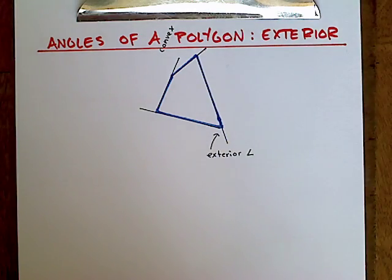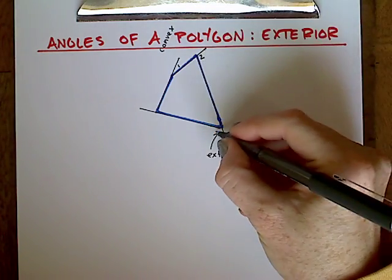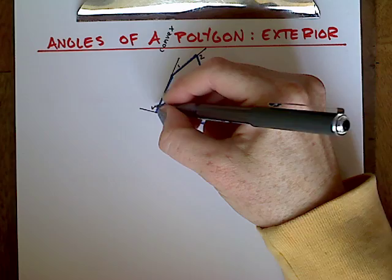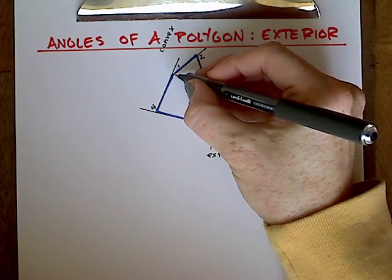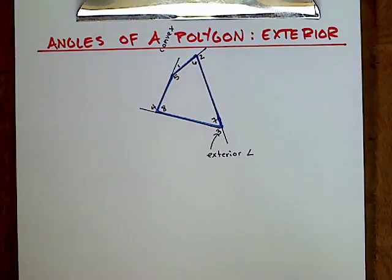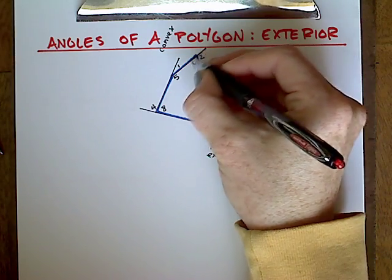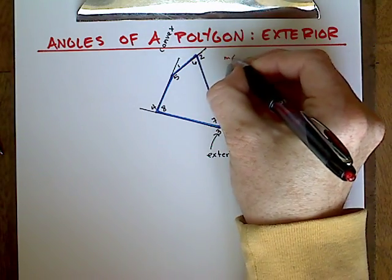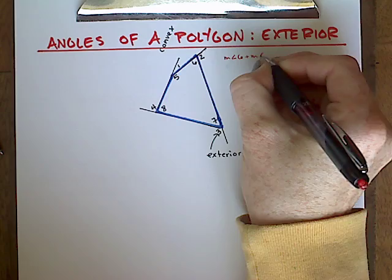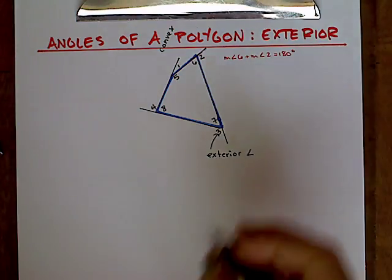So now I'm going to number these angles one through four. And then I'm going to number the interior angles five through eight. And the reason why I'm going to do this is I want to show you the relationship between the exterior angle and the interior angle. Notice six and two form a straight angle together, meaning that their sum equals 180 degrees.